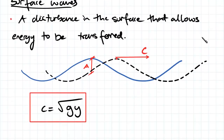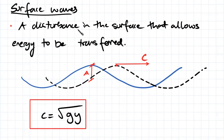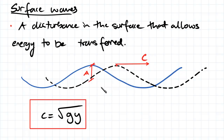Surface waves are a disturbance in the surface that allows energy to be transferred. For example, when we drop something in a fluid, energy is transferred as that object hits the surface of the fluid. A wave is going to have some amplitude and some speed. For open channel flows which have a shallow depth, the wave speed is equal to √(gy), where y is the depth of our fluid.